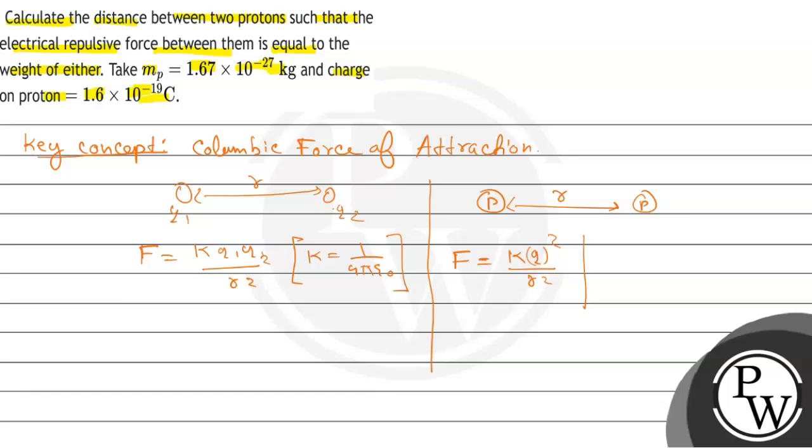Hamein find karna parega R ka value kitne hone se, jaha force between them is equal to the weight of either. To mass of a proton is 1.67 × 10^-27 kg, the weight of a proton is equal to mass of the proton into G.